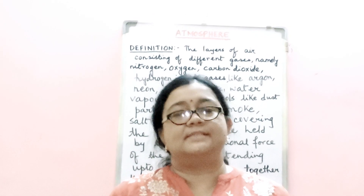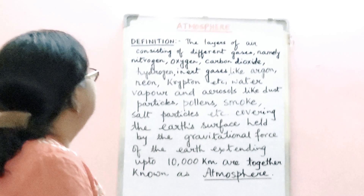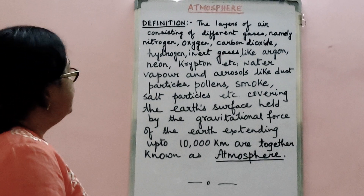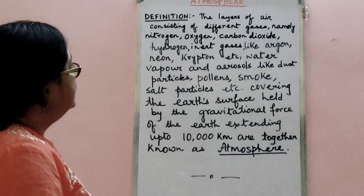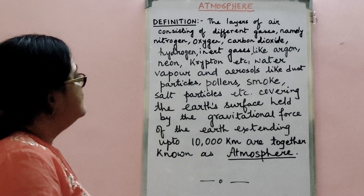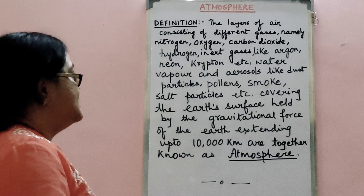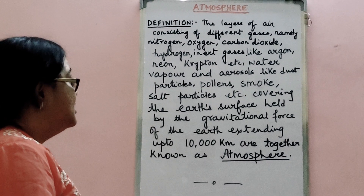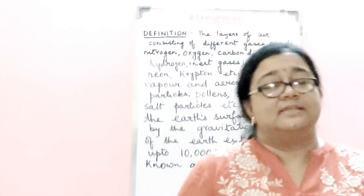Now I'm sharing some facts about the atmosphere. The formal definition: the layers of air consisting of different gases — namely nitrogen, oxygen, carbon dioxide, hydrogen, inert gases like argon, neon, krypton, etc., water vapor, and aerosols like dust particles, pollens, smoke, and salt particles — covering the Earth's surface, held by the gravitational force of the Earth and extending up to 10,000 km, are together known as the atmosphere. Beyond this 10,000 km there is space.